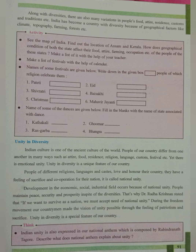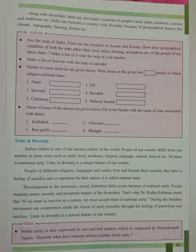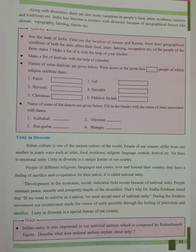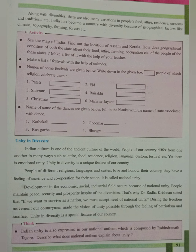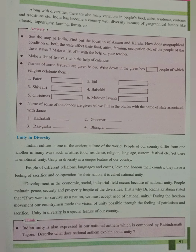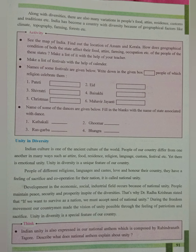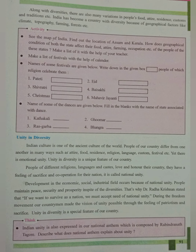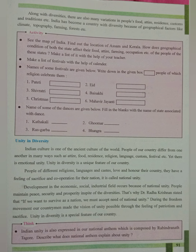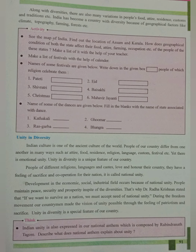Unity and Diversity: Indian culture is one of the oldest cultures in the world. People of our country differ from one another in many ways — attire, food, residence, religion, language, custom, festival etc. — yet there is emotional unity. Unity in diversity is a unique feature of our country. The diversity in looks, colour, complexion, attire, food, lifestyle, customs and traditions is seen in the people of India, but emotional unity prevails among the countrymen.